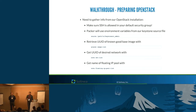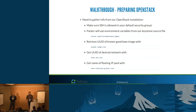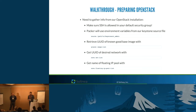This is how we gather the info we need for OpenStack. First, make sure you've got SSH allowed in your security group — that's something you'll hit the first time with a new cloud. Packer uses the environment variables from your Keystone source file, so source that — it will know your Keystone endpoint and admin credentials. You'll also need some unique IDs: find the base Ubuntu image ID with glance image-list, get the desired network with nova net-list, and find a floating IP so you can connect to the instance.